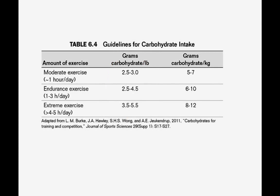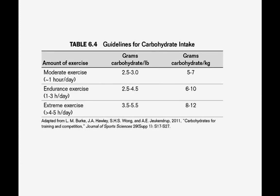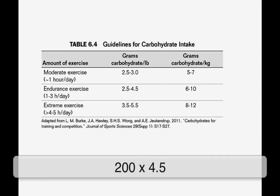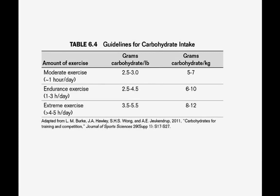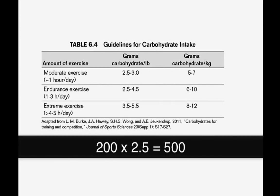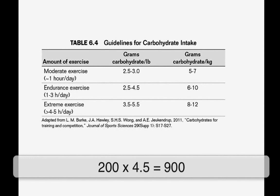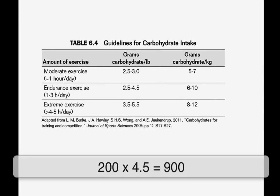Let's assume our subject is a triathlete exercising 1–3 hours a day and weighs 200 pounds. We will multiply 200 times 2.5 to get the lower range and 200 times 4.5 to get the higher range of carbohydrates he should consume. 200 pounds times 2.5 equals 500, and 200 pounds times 4.5 equals 900 grams of carbohydrates a day.